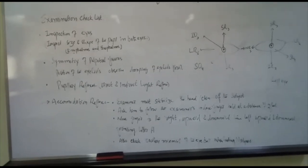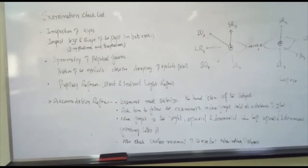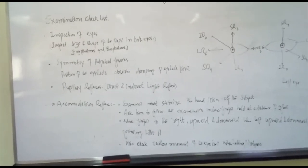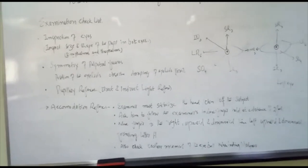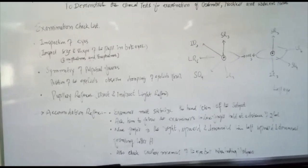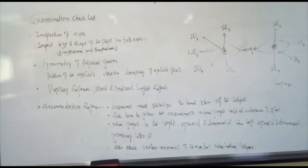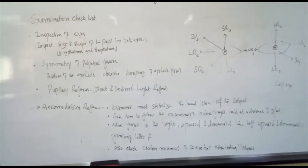Examiner must stabilize the head and chin of the subject. Ask him to follow the examiner's index finger held at a distance of 2 feet. Move finger to the right upward and downward, then left upward and downward forming letter H. Also check auxiliary movement of eyeball when testing ocular movements for nystagmus.